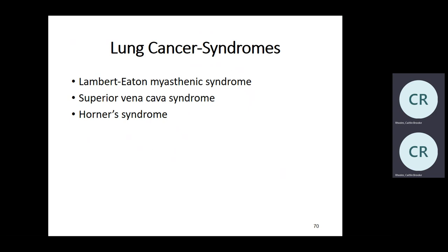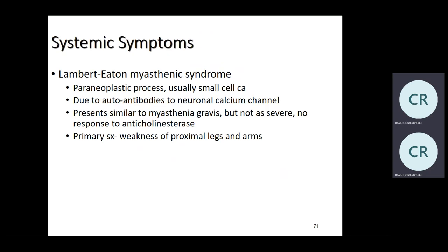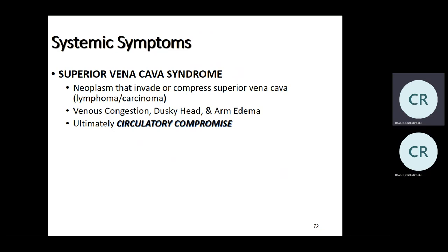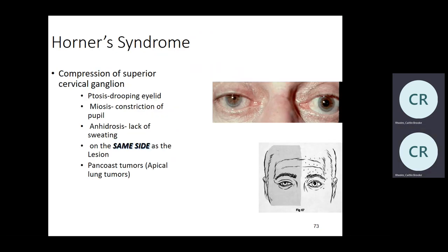Know your paraneoplastic syndromes associated with lung cancer. Lambert-Eaton myasthenic syndrome: usually due to small cell carcinoma, autoantibodies to neural calcium channels — looks like myasthenia gravis but does not respond to anticholinesterases. Superior vena cava syndrome: neoplasm involving the superior vena cava. Horner syndrome: ptosis, miosis, and anhidrosis on the same side — tumor compressing the superior cervical ganglion.